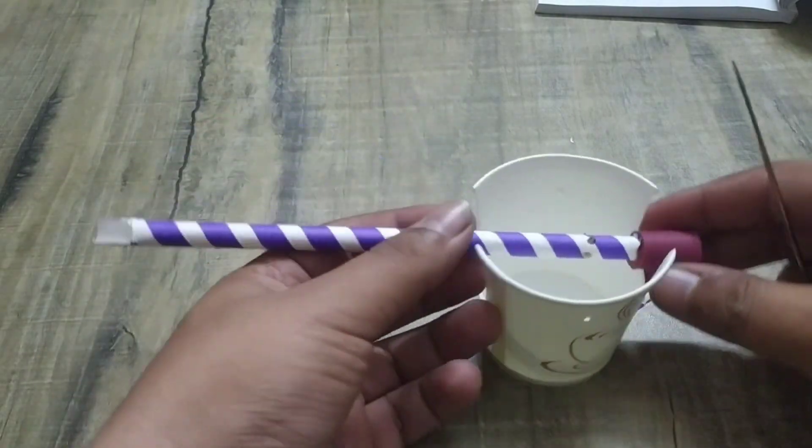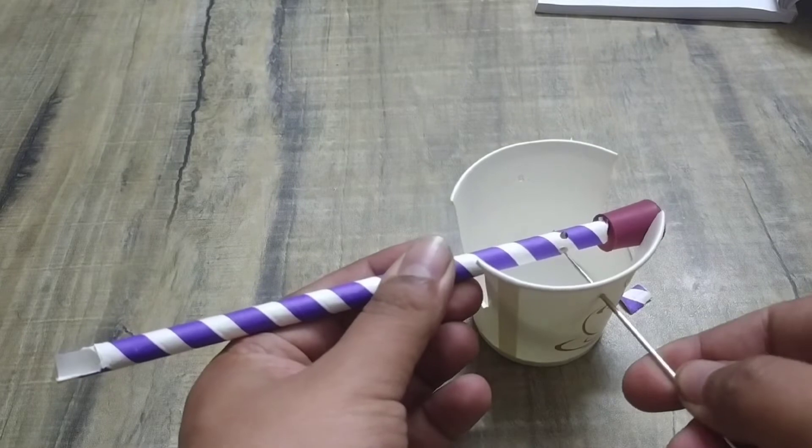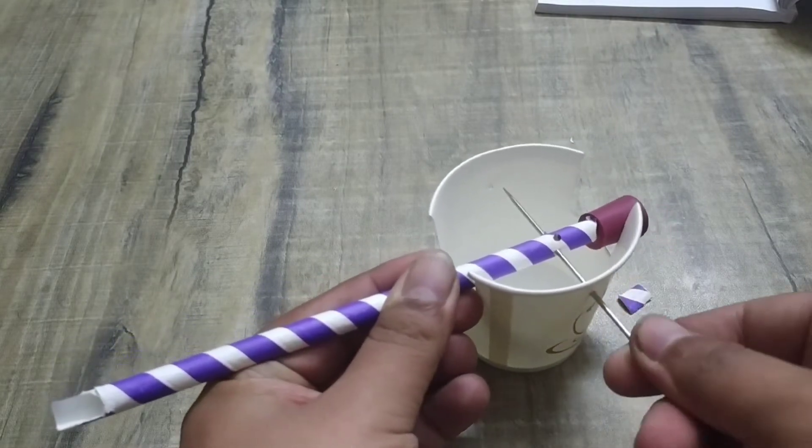Now push the needle through one side of the cup, then through the marked spot of the straw, then through the other end of the cup.